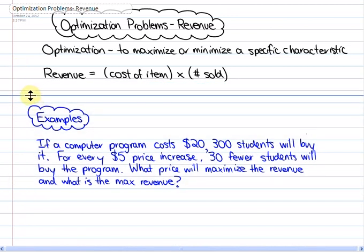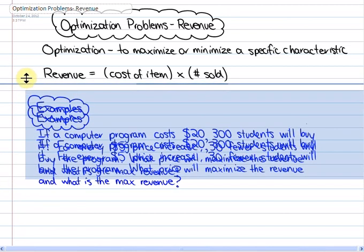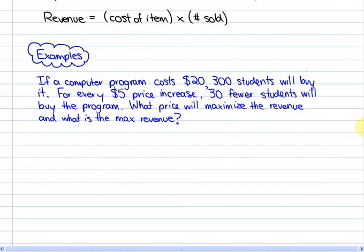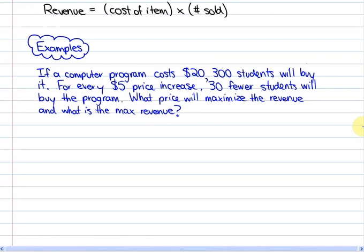This particular example is looking at a computer program. If a computer program costs $20, 300 students will buy it. For every $5 price increase, 30 fewer students will buy the program. What price will maximize the revenue and what is the maximum revenue?